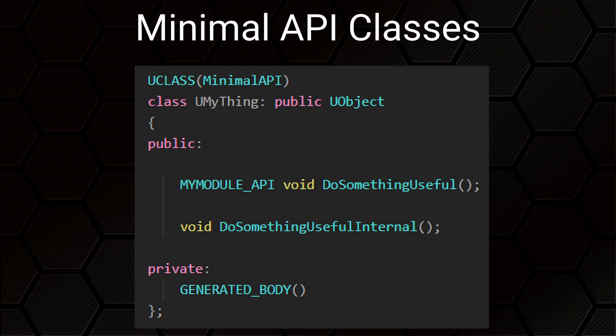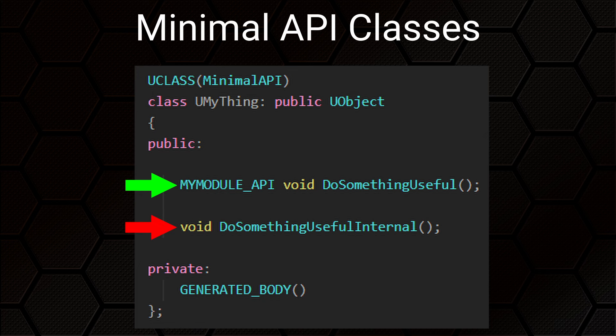To expose specific functions for use outside of this module, we mark them with our module's API macro — this is automatically created by Unreal and is the name of the module with '_API' appended, all in capitals: for example, MODULENAME_API. A function marked with that macro is callable from other modules; a function without it is not — only code in the same module should call it. And yes, even though both might have C++ 'public' scope, your IDE might be perfectly happy with you writing code that tries to call the internal version of a function, and may not indicate a problem until you attempt to compile and it fails with unresolved external symbol errors.